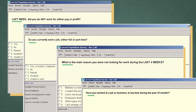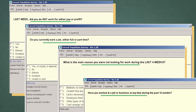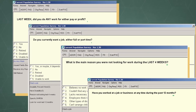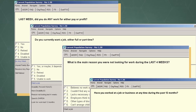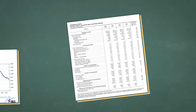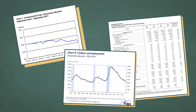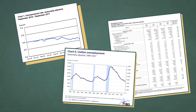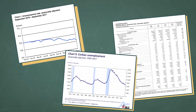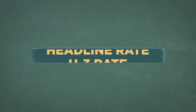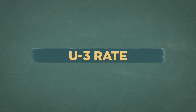Each month, the Bureau of Labor Statistics surveys 60,000 households to gather a bunch of information about the job market. The answers to this survey determine the official unemployment rate you hear reported in the news. This is sometimes called the headline rate, or in official econ speak, the U3 rate.